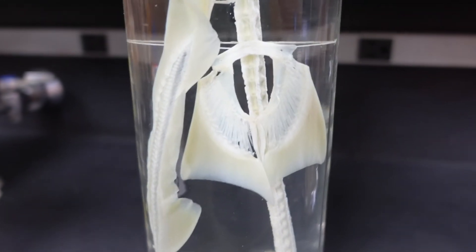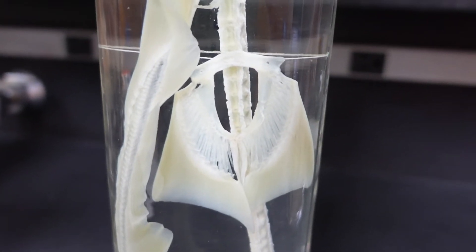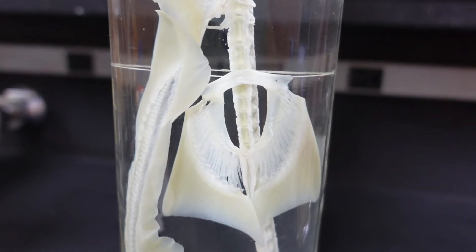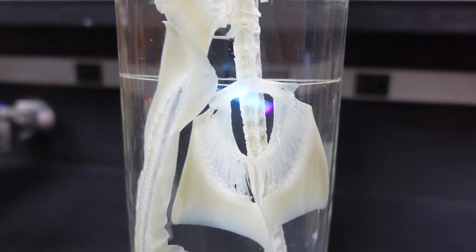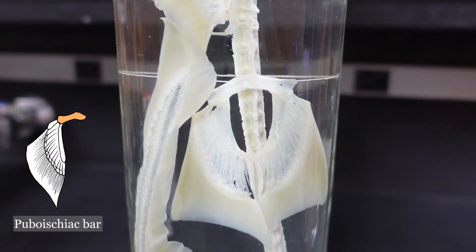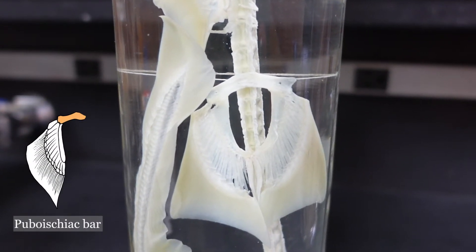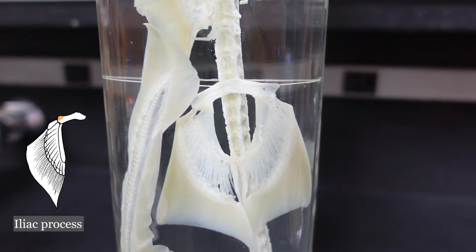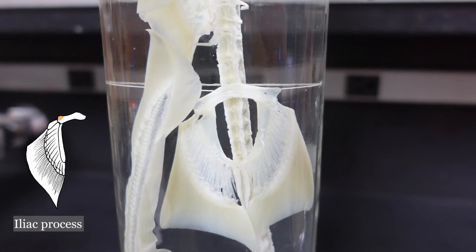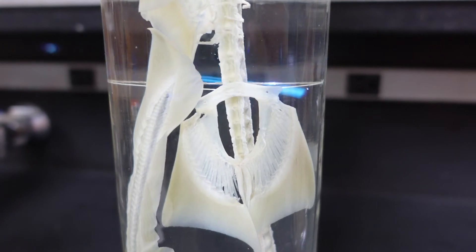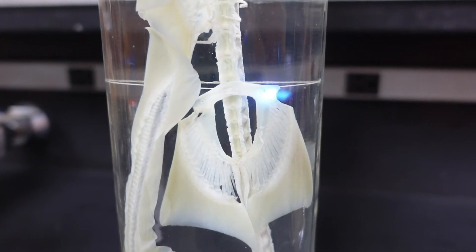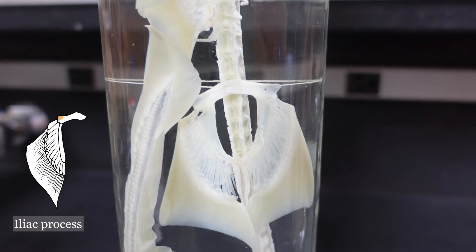Here we see the pelvic girdle on the small shark and the pelvic fins. Similar to the pectoral girdle, there is a bar going across called the pubo-ischiac bar, and it has an iliac process. Unlike the scapular process, there is no iliac cartilage coming off of it. It is completely fused to the pubo-ischiac bar, so this is just the iliac process.